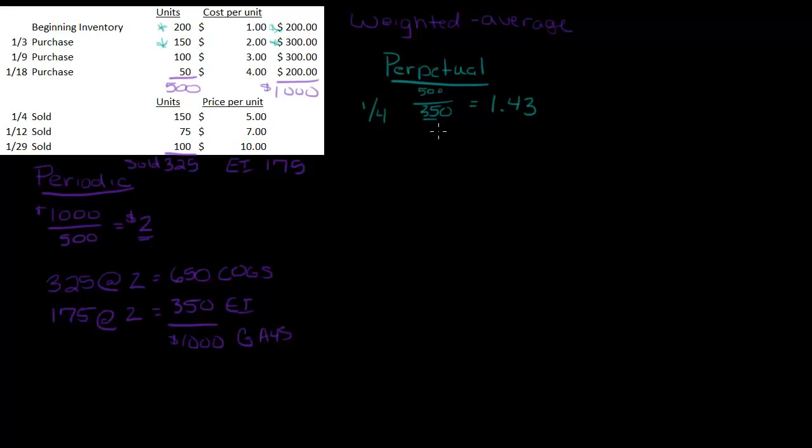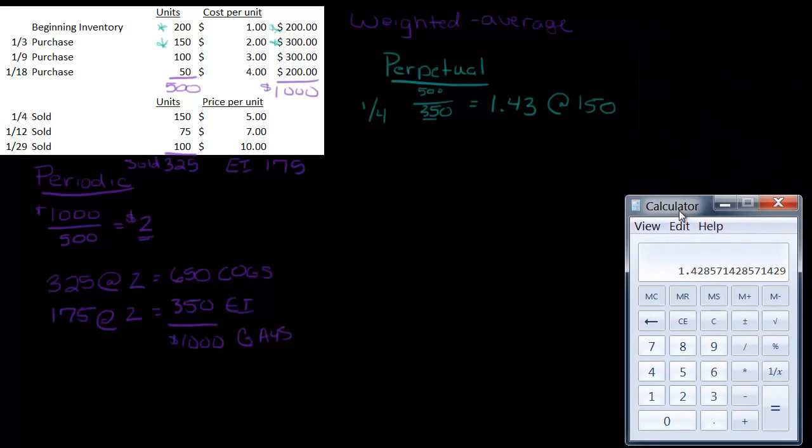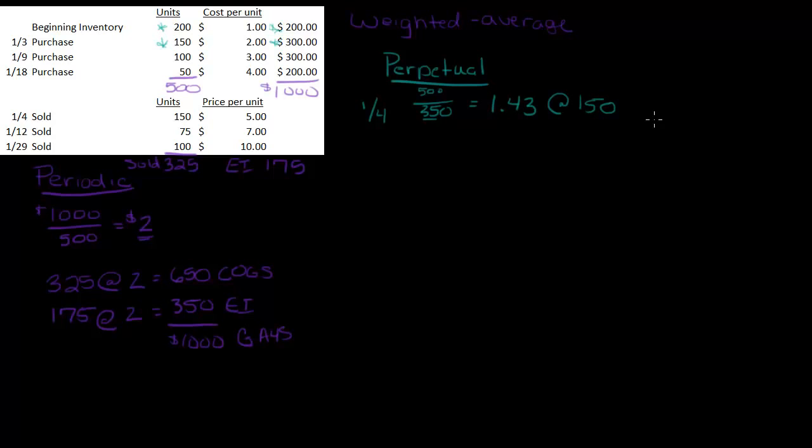When you're doing weighted average you're going to have a little bit of rounding, so don't let that freak you out if you don't tie exactly back to the $1,000 because we did do a little bit of rounding. So $1.43, how many units did we sell? We sold 150 units at $1.43, and we'll need the calculator back. So we've got $1.43 per unit times 150 units because that's how many were sold, and that is $214.50. So that's my cost of goods sold for the 1/4 transaction.